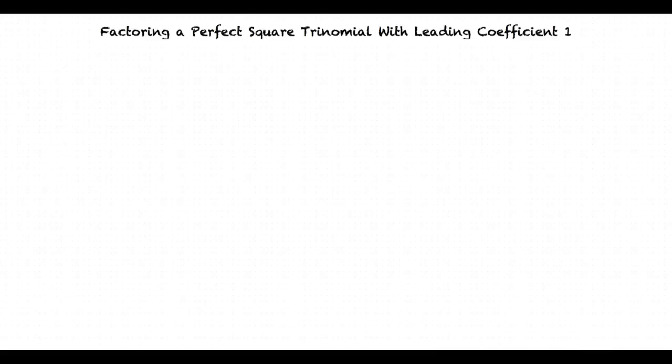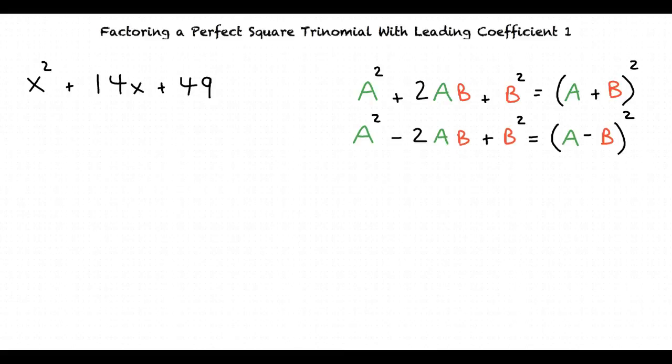Let's take a look at our example problem. We are asked to factor x squared plus 14x plus 49. And we use the following formulas to factor perfect square trinomials.